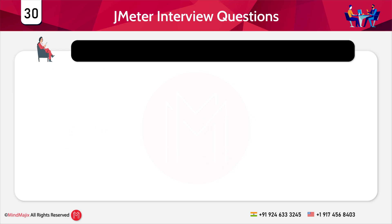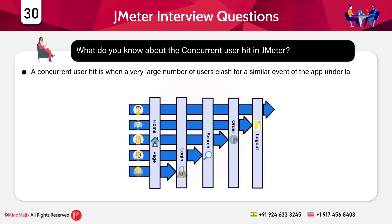The next question is: what do you know about concurrent user hit in JMeter? A concurrent user hit is when a large number of users clash for the same event of the application under load test simultaneously. Because of this, a concurrency point is considered, which makes virtual users wait until others are already running the scripts.